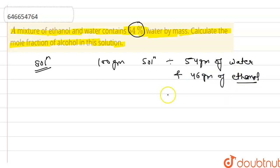So now calculate their moles separately. Moles of ethanol according to their masses: 46 upon molar mass 46, that is 1. And moles of water: that is 54 divided by 18. 18 is molar mass of water, that is 3.